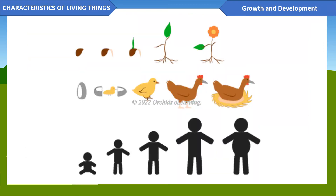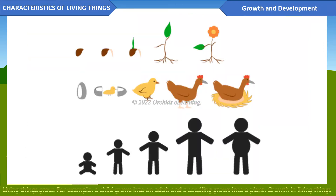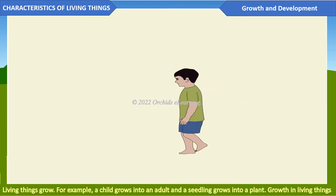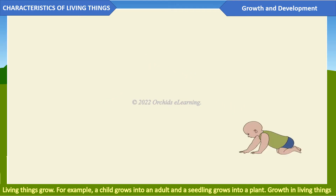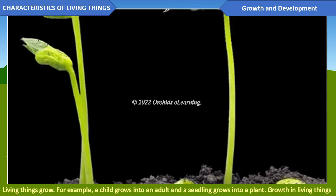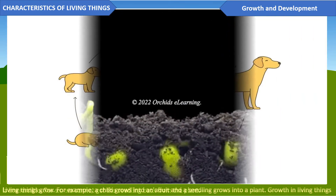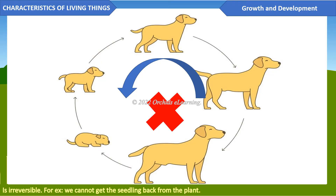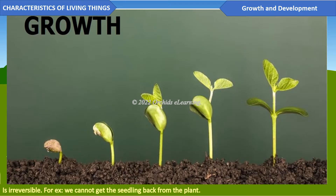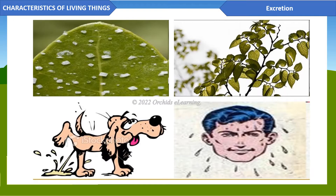Growth and development: living things grow — for example, a child grows into an adult and a seedling grows into a plant. Growth in living things is irreversible; for example, we cannot get the seedling back from the plant.